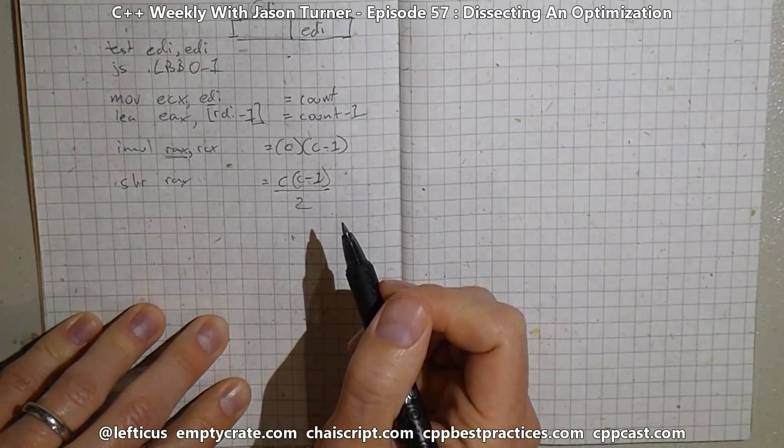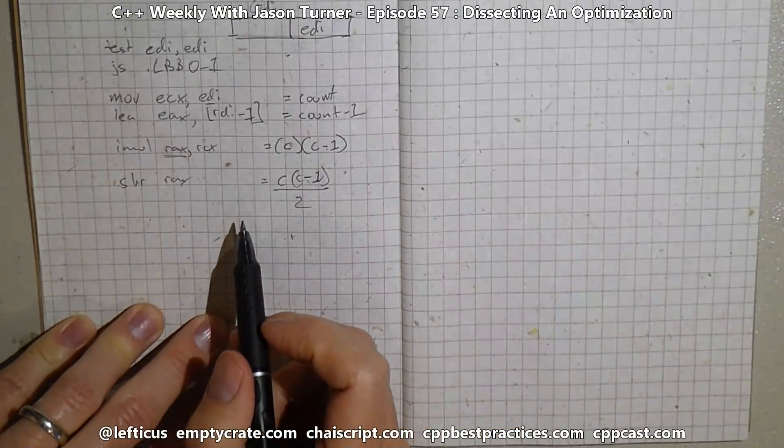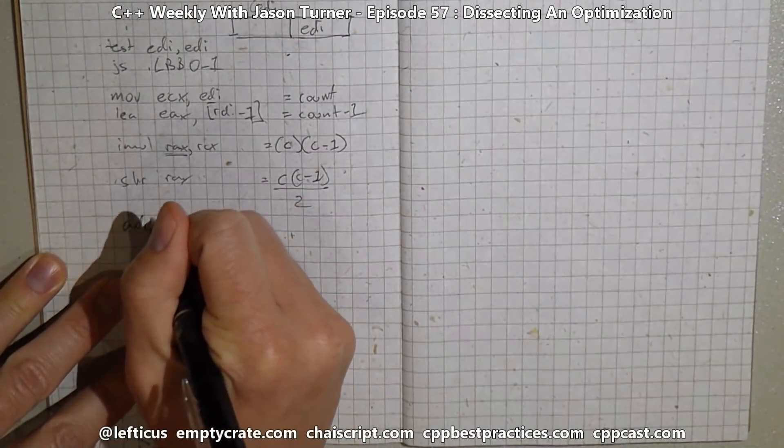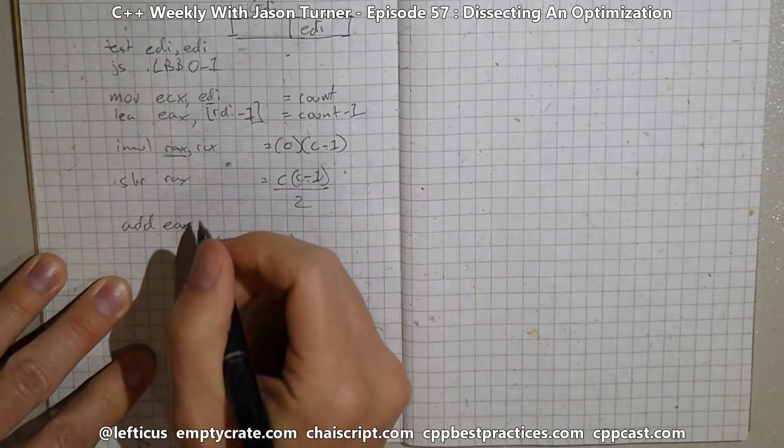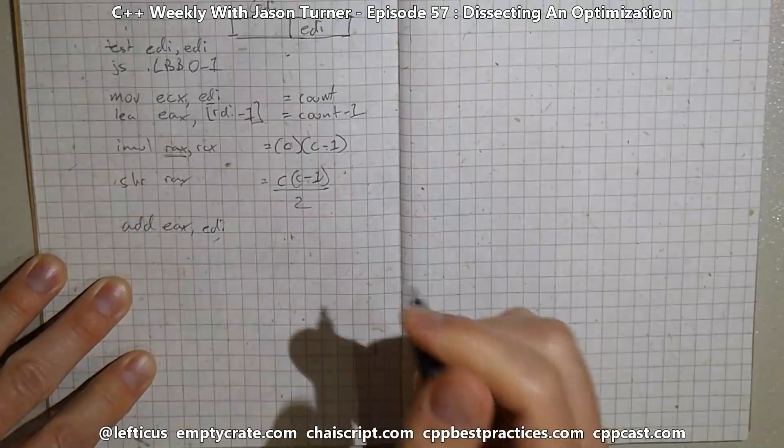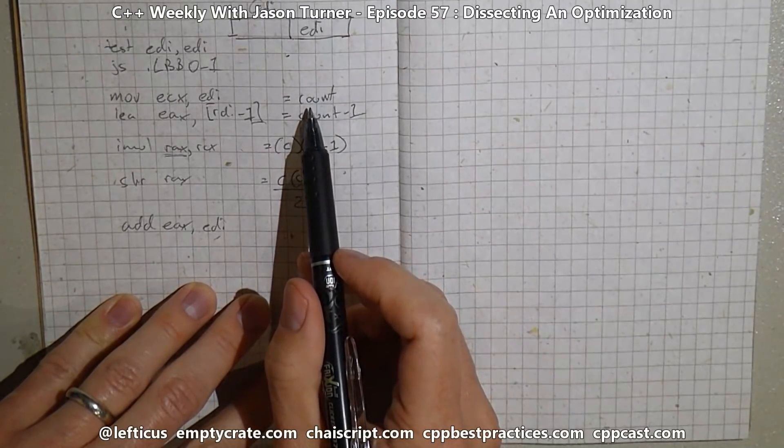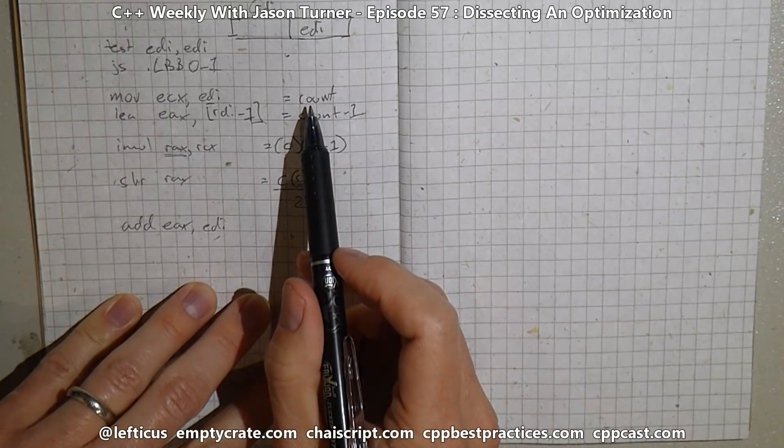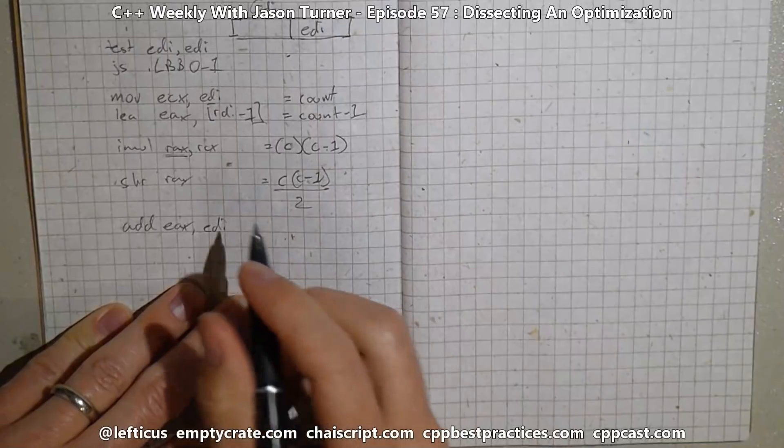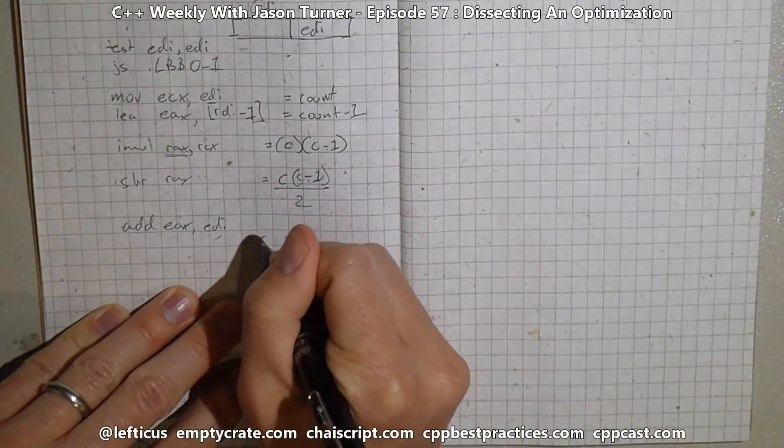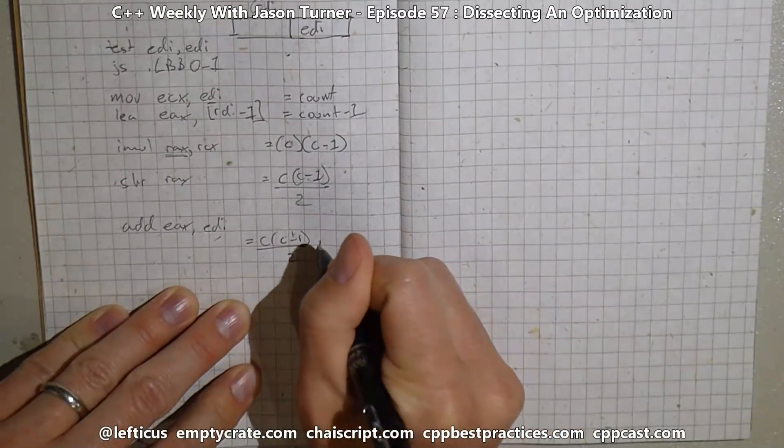So now we have C times C minus one divided by two, and then we add back in EDI. So add EAX, and notice we're back to the 32-bit version of the register instead of the 64-bit one, EDI. So we are adding in our original count value because we never modified EDI. That would be a rather unfortunate thing to do, I think, since this was a constant that was passed in. But the compiler might have been able to do things with shifting registers stuff around that I don't understand. And this is our final value. So now our result is C times C minus one divided by two plus C.